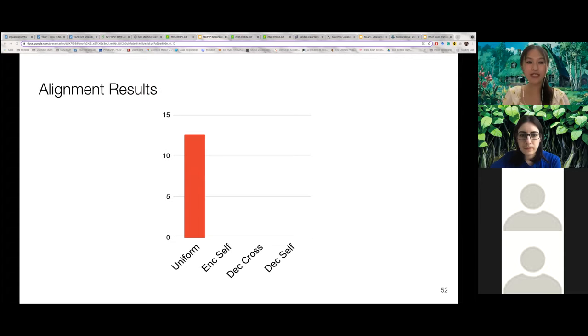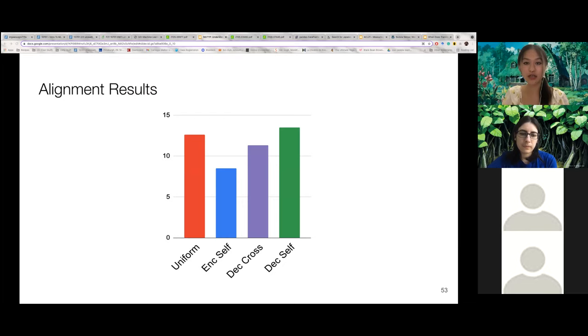And so using this metric, we compare the alignment score of a uniform distribution with alignment score of our model attention against the SCAT annotations. And we find that for the model attention, we measure the alignment with SCAT for the encoder self-attention, the decoder cross-attention and the decoder self-attention. And we find that the alignment between the encoder self-attention and SCAT is slightly better than the alignment score of a normal uniform distribution.